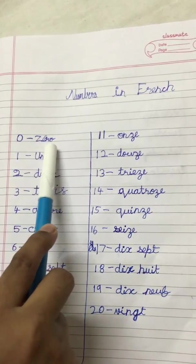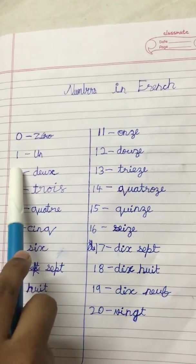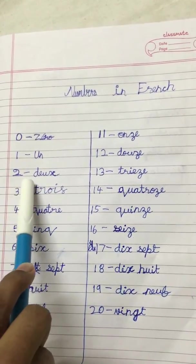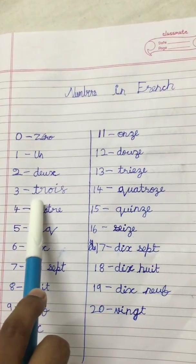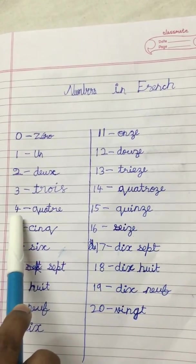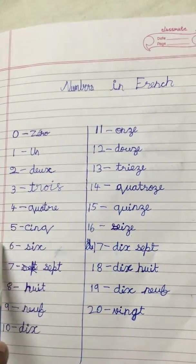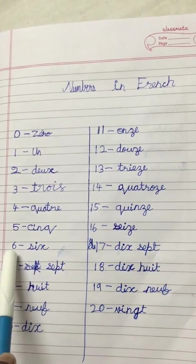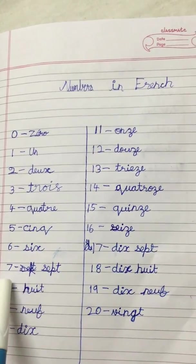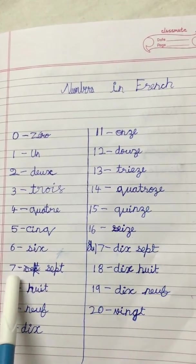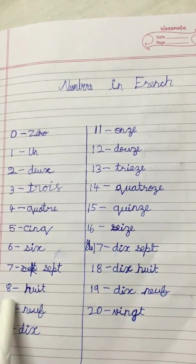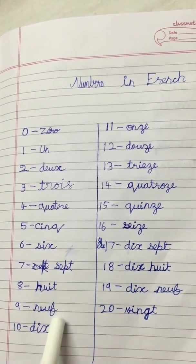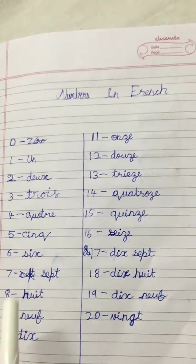0 is called as zero, 1 is called as un, 2 is called as deux, 3 is called as trois, 4 is called as quatre, 5 is called as cinq, 6 is called as six, 7 is called as sept, 8 is called as huit, 9 is called as Nerf, 10 is called as Deeks.